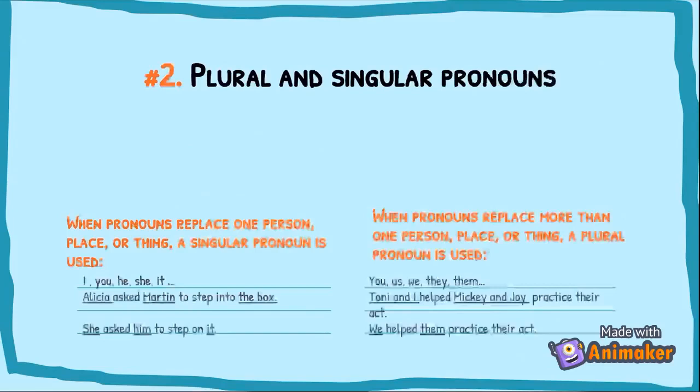For example: Alice asked Martin to step into the box. Alice is one person and Martin is one person, and the box is one object. So it's going to be: she asked him to step on it.